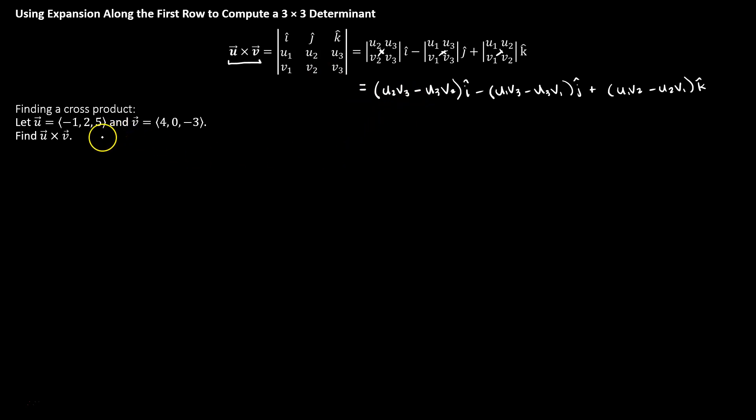Let's practice using it. If u is the vector (-1, 2, 5), and v is the vector (4, 0, -3), and we're asked to calculate u cross v, then we're going to start by creating that 3x3 matrix.